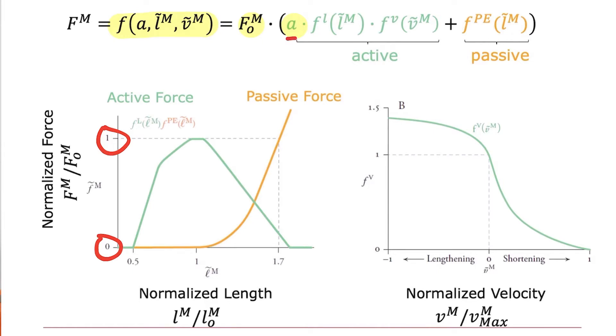So this activation will be a number between zero and one. We'll also have what we call a force length multiplier. That is also going to be a number between zero and one, and it's basically the y-axis of this curve.